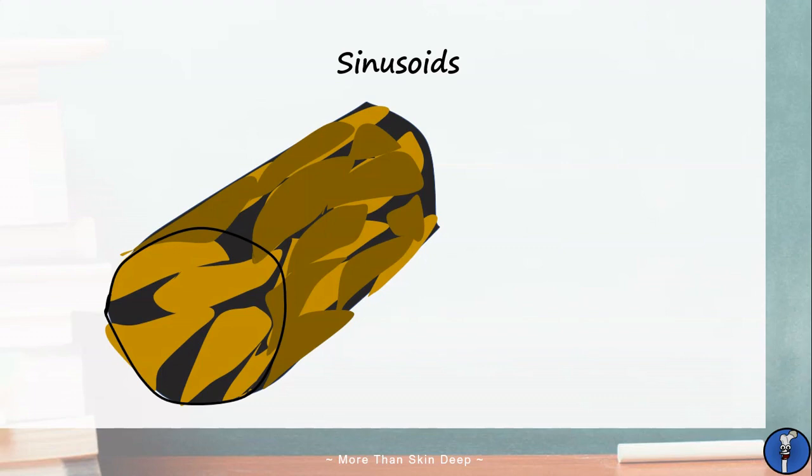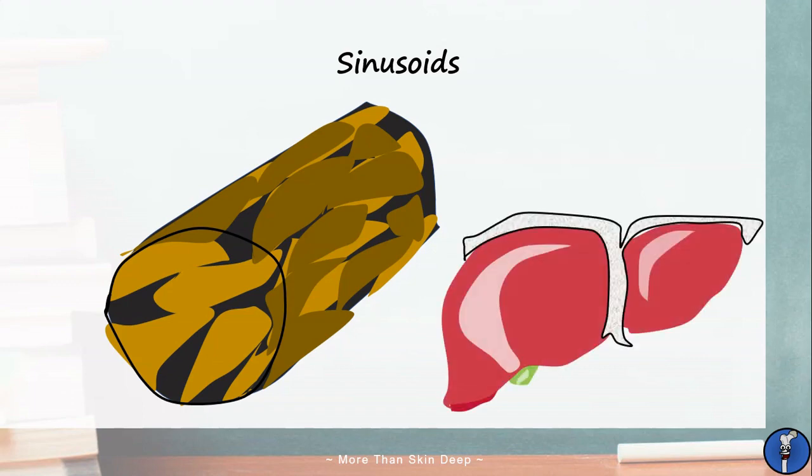And last of all we have sinusoids. These have extensive gaps between cells in the endothelium and an incomplete basement membrane. They are found in the liver, bone marrow, adrenal glands and other organs that require mass exchange of large molecules. Flow through them is slow and the large holes allow exchange of big structures including some cells.